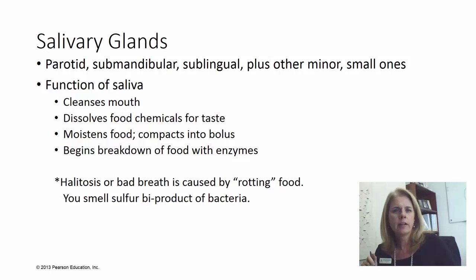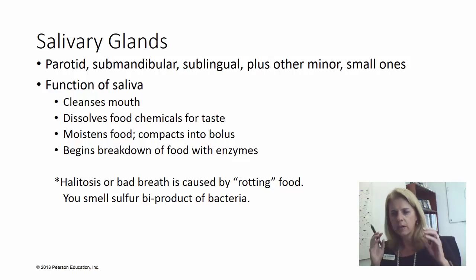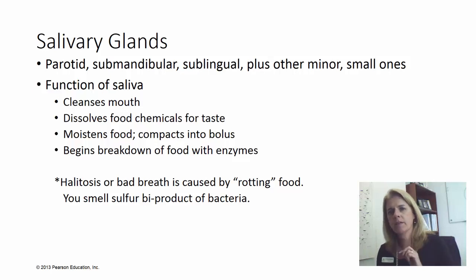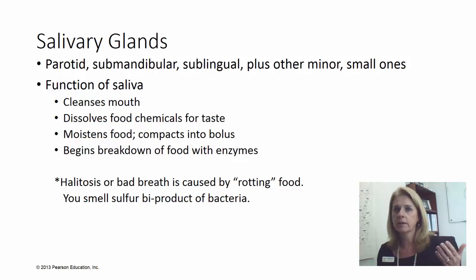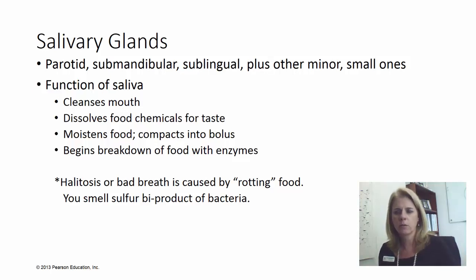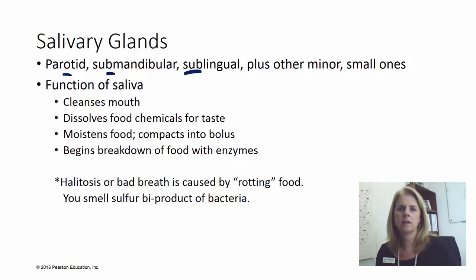The salivary glands — you have several. You have your parotids, which are the big ones. You have your submandibulars, which are below the mandible, and then sublingual, which is below the tongue. We'll talk more about these on the lab portion. There are also a couple of minor ones, but these are the three you'll need to recognize on the lab test.